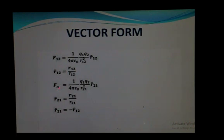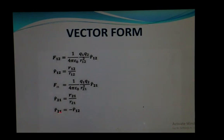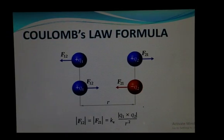Similarly, in this equation, F21 represents the force exerted by charge Q1 on charge Q2. The unit vector R21 points from charge Q2 towards Q1, and is equal to vector R21 over its magnitude. Here you can see we have put a negative sign, meaning these two unit vectors R12 and R21 are equal in magnitude but opposite in direction. You can see the Coulomb's law formula with charges Q1, Q2 and forces F12 and F21.